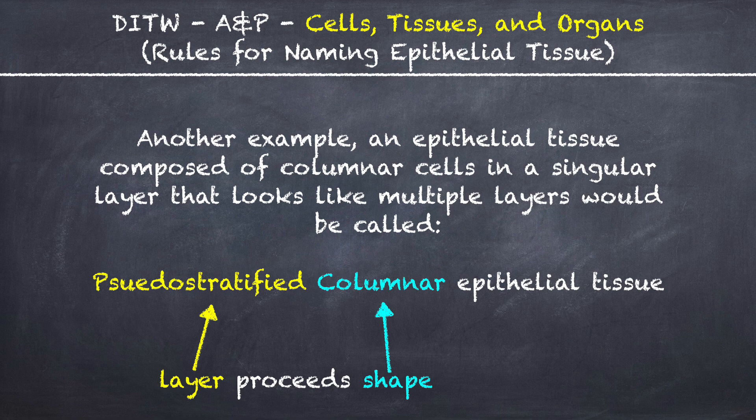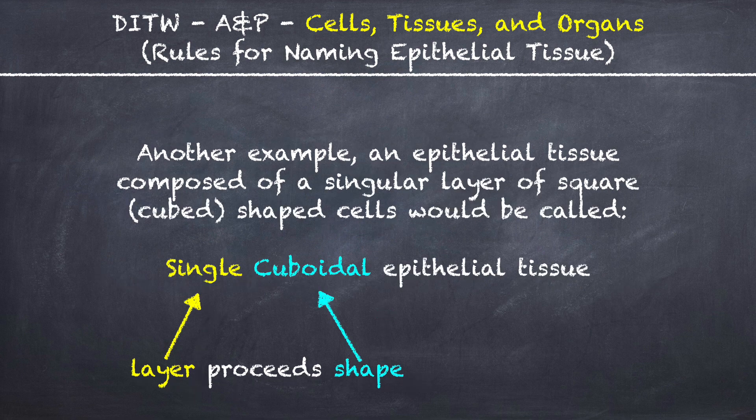Another example: an epithelial tissue composed of columnar cells in a singular layer that looks like multiple layers would be called pseudostratified columnar epithelial tissue. Another example: an epithelial tissue composed of a singular layer of square cube-shaped cells would be called simple cuboidal epithelial tissue.